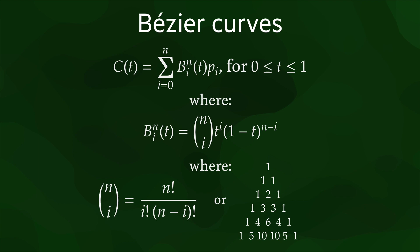In the second equation, we see how the weights are actually computed. B is the so-called Bernstein polynomial of degree n, which for the i-th point is defined as the binomial coefficient of n choose i times t to the i times 1 minus t to the n minus i.